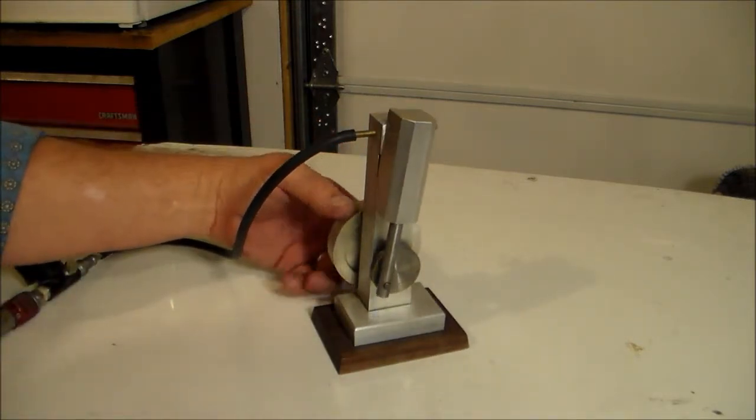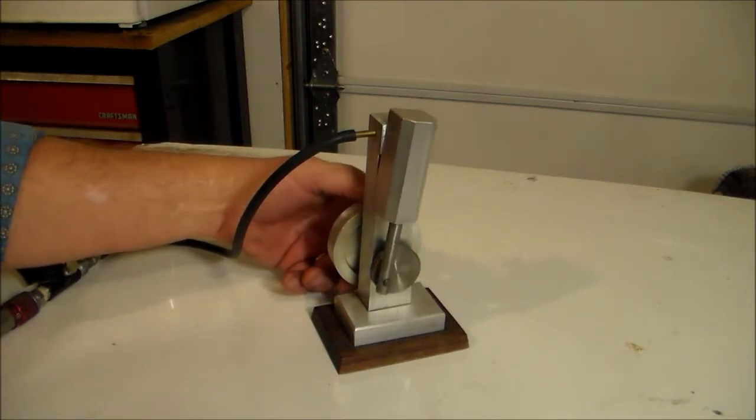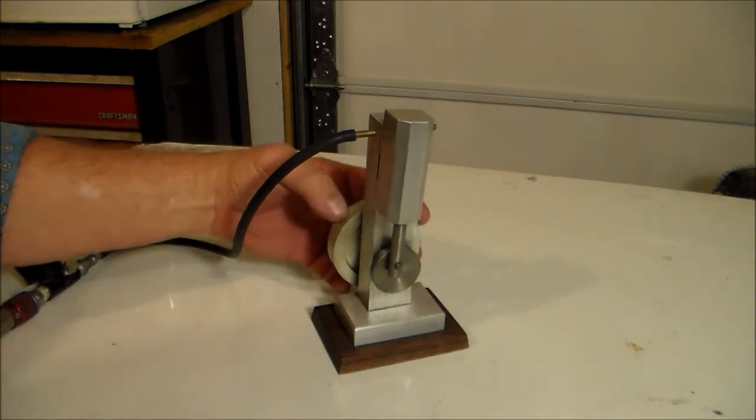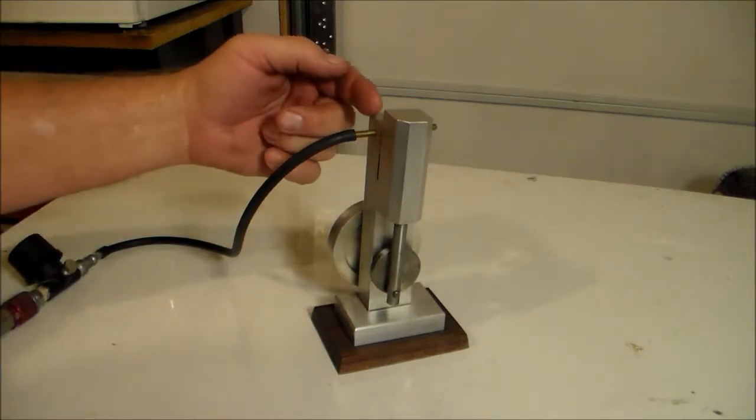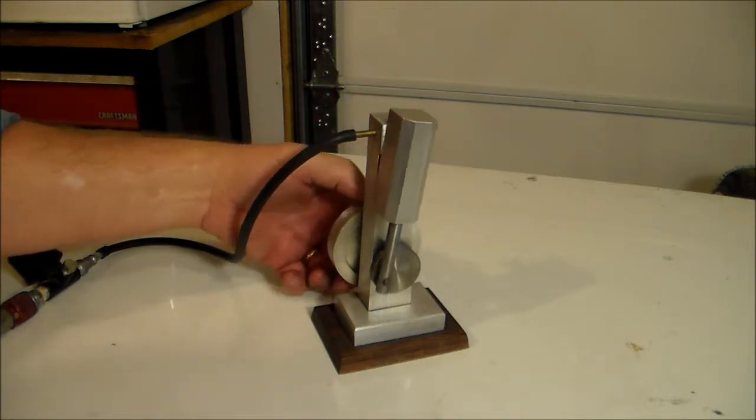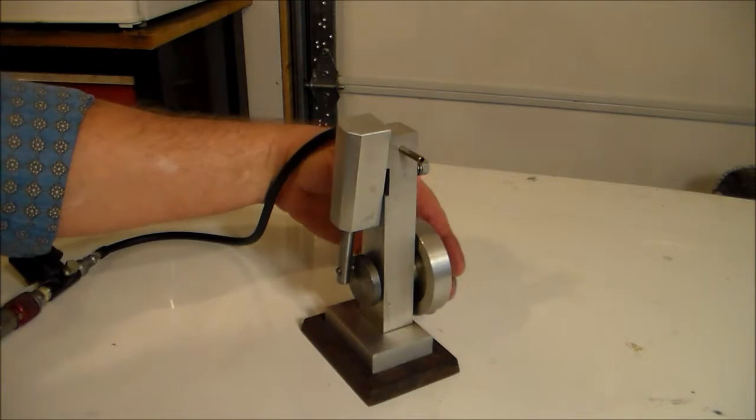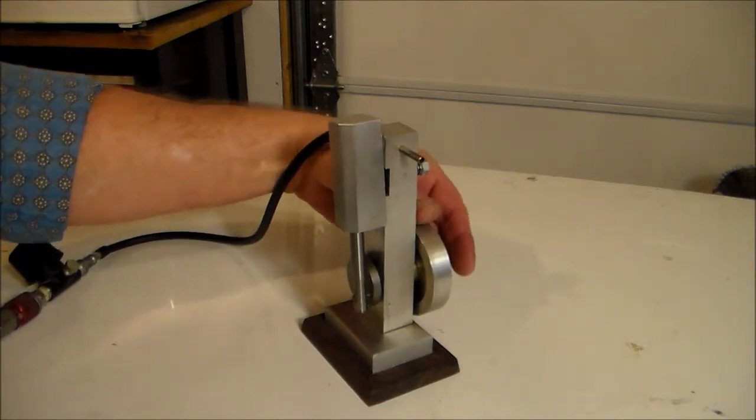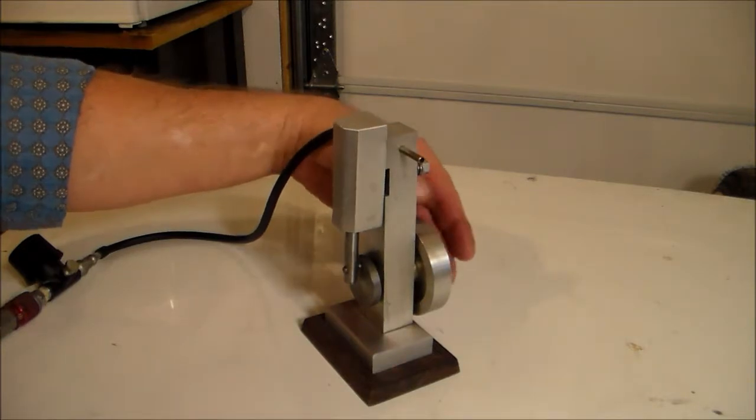They call it an oscillating steam engine because the connecting rod does not have a wrist pin. The cylinder itself oscillates. With it oscillating like that, that lines up the air and exhaust port on the little cylinder. It's a single action cylinder and it gets its air charge and exhausts air through the same port on the cylinder.